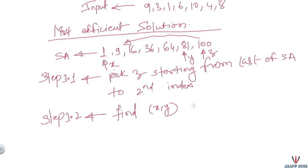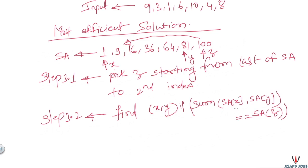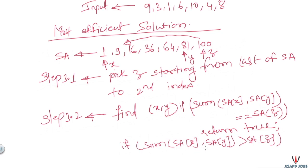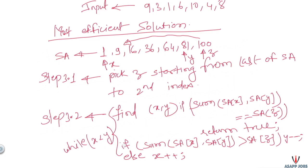We follow this logic: if the sum of elements at x and y equals the element at z, we've found our pair and return true. If the sum of x and y is greater than z, we decrement y; otherwise, we increment x. This continues while y is greater than x. If no pair is found in the while loop, we decrement z and repeat the entire process. This while loop executes n minus 2 times.